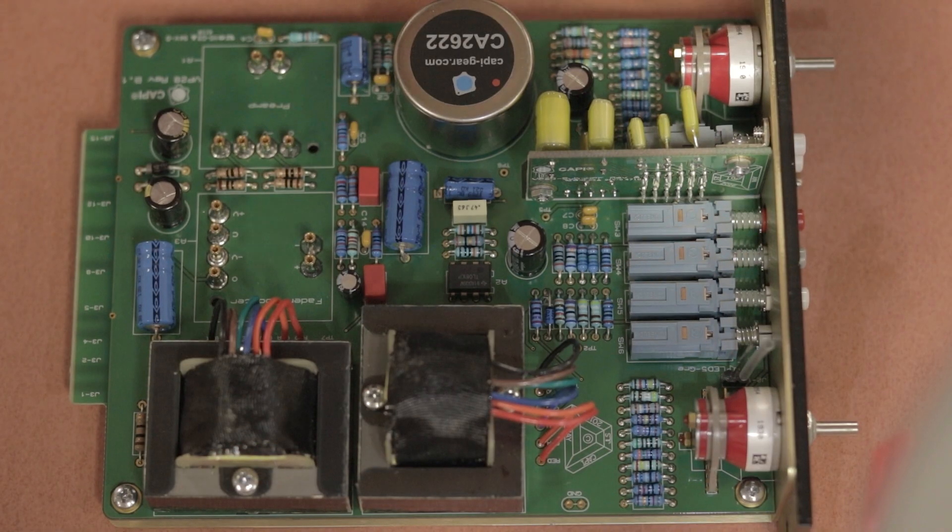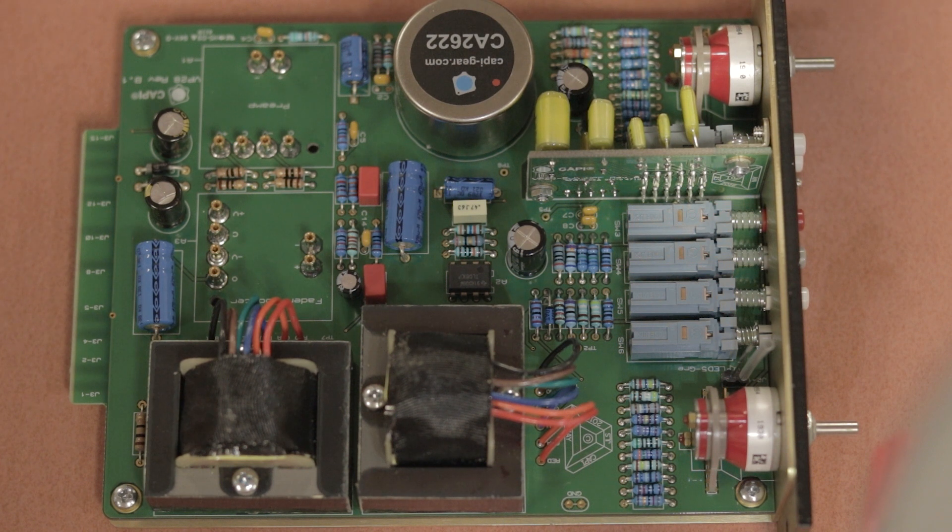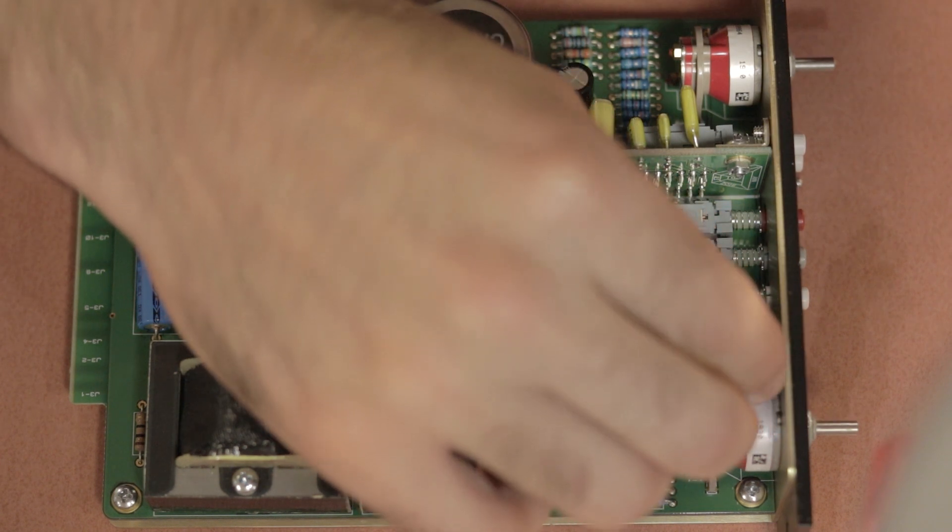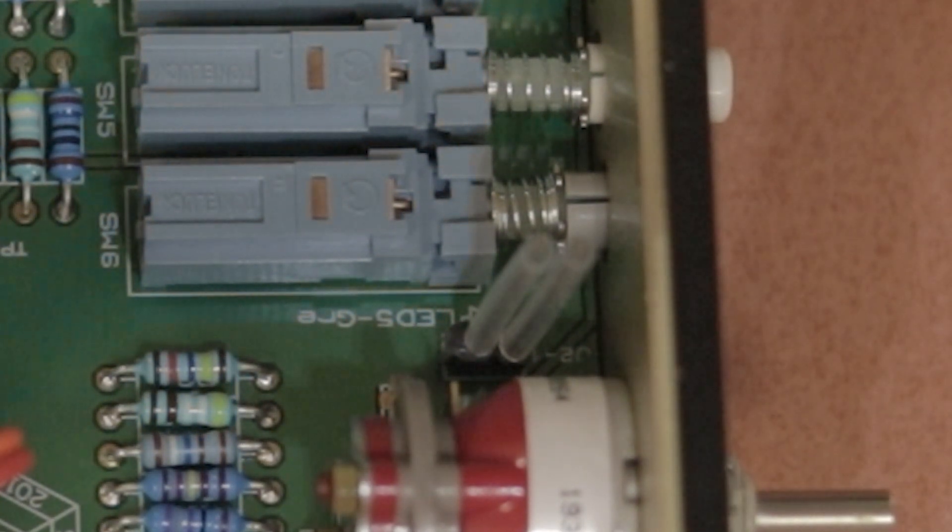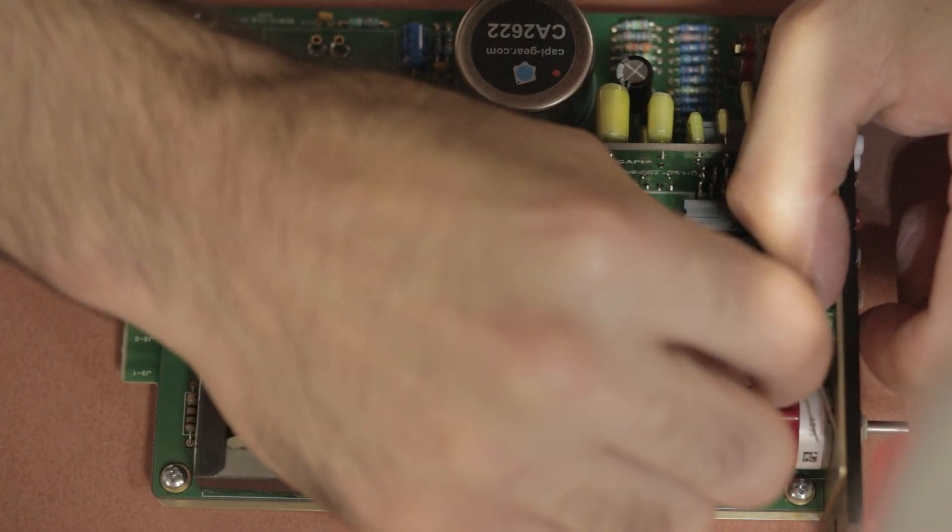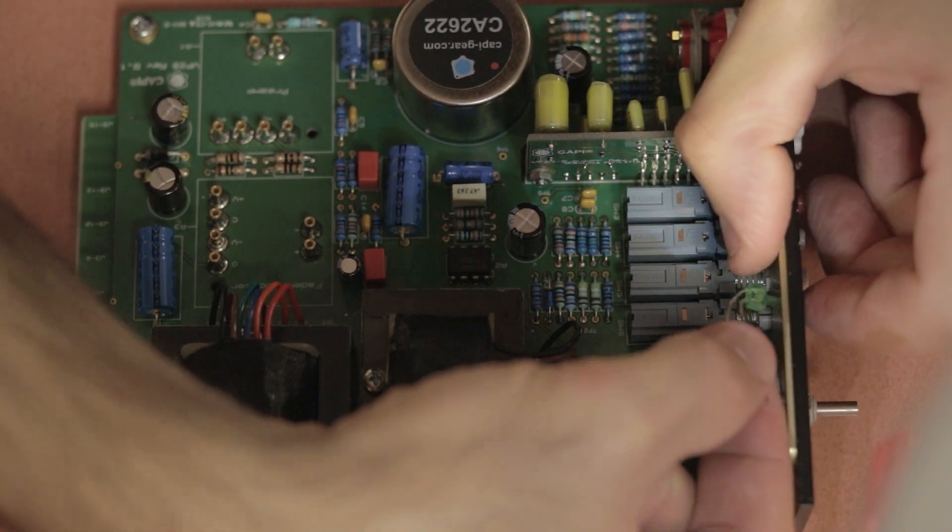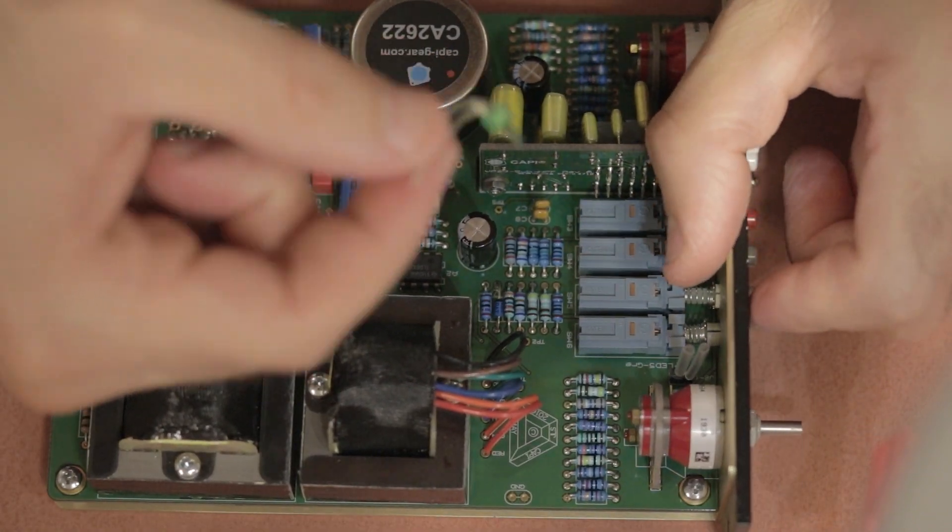Then we have to install this heat shrink tubing to the header we installed ages ago on the main PCB. This is to connect the LED signal light. You want to make sure that the pins are exposed a small amount at the top there.